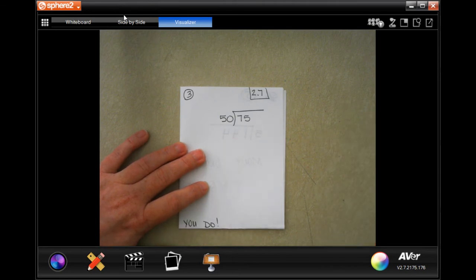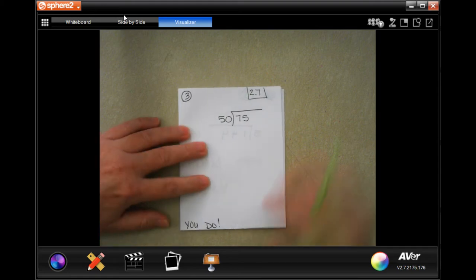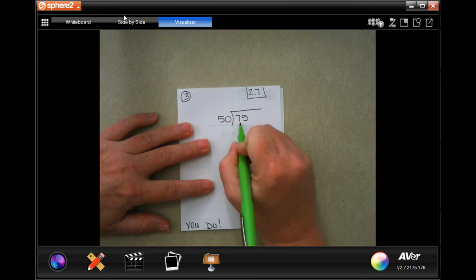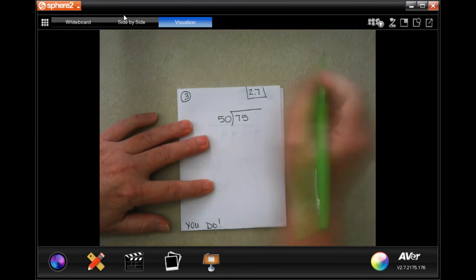Number 3 says, on the 5th grade class picnic, 50 students share 75 sandwiches equally. How many sandwiches will each student get? So, let me start here. 50 is definitely not going to go into 7, but it will go into 75.